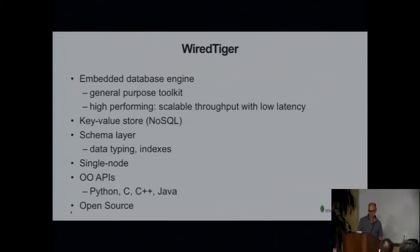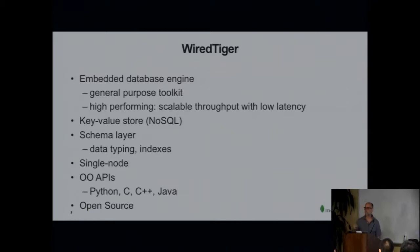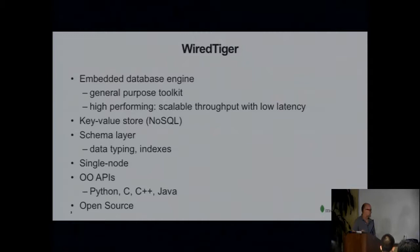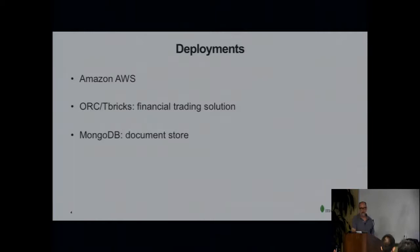From a top-level viewpoint, what's WiredTiger? It's an embedded database engine. Our goal is to be a general-purpose toolkit. There are two ways you see database engines going: solving a random general-purpose workload, or solving a very specific problem like OLTP. We are a general-purpose toolkit — high-performing, scalable with low latency. We're a key-value store, NoSQL of course, but unlike many traditional embedded database engines we do have a schema layer with data typing and secondary indexes. We are single-node, and we support Python, C, C++, and Java. We're open source.